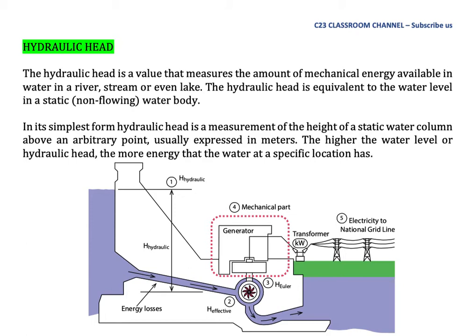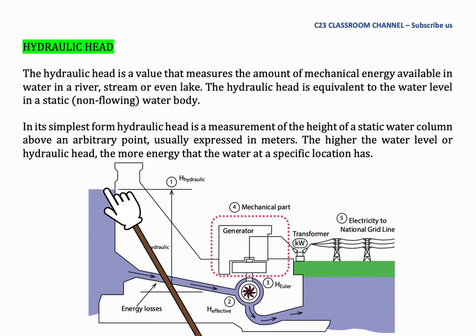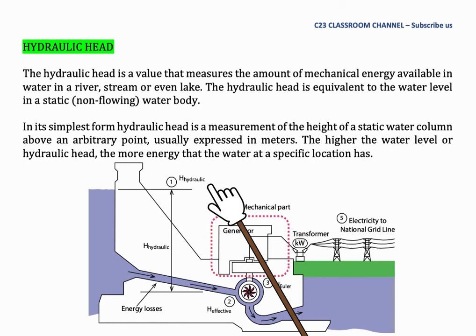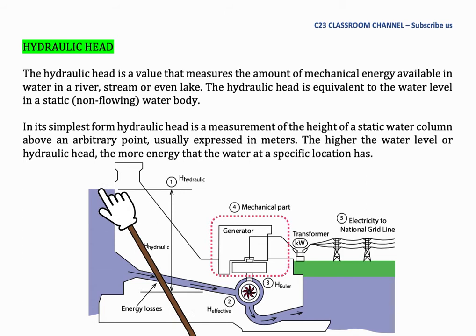The higher the water level or hydraulic head, the more energy that the water at a specific location has. If we see this diagram, we have a dam here and this is the water level, and this water will flow to the Francis turbine here with a pipe system. The hydraulic head is the distance from the level of water here to the central point of the Francis turbine.